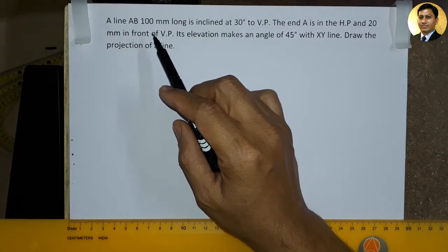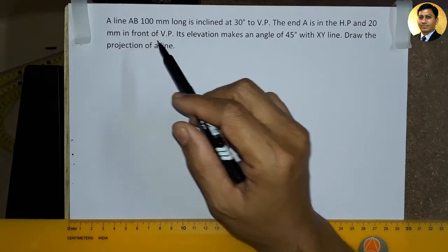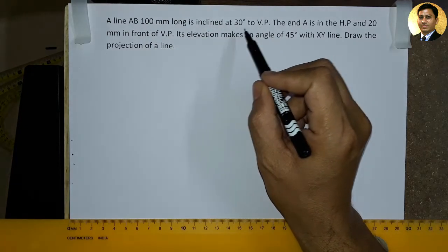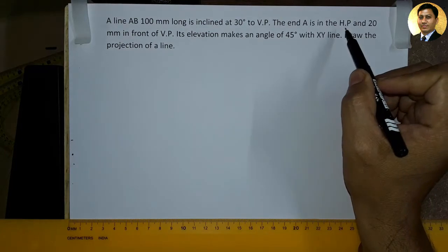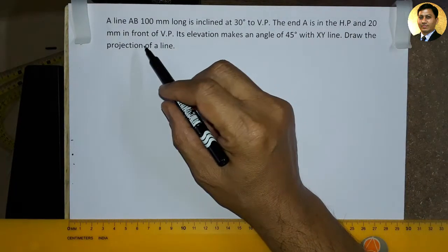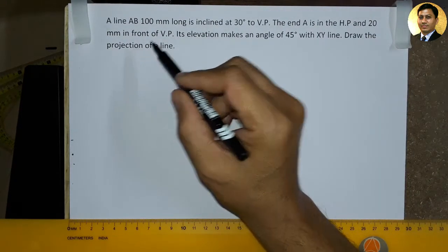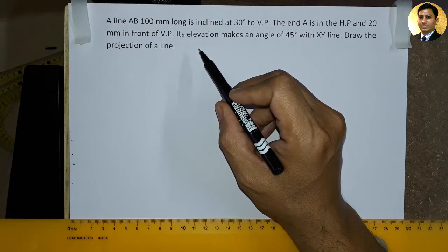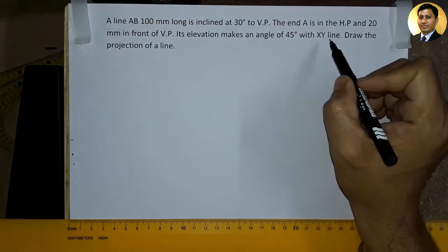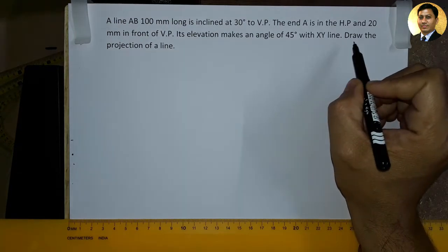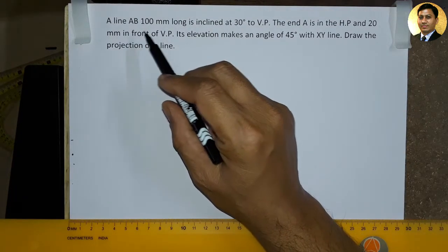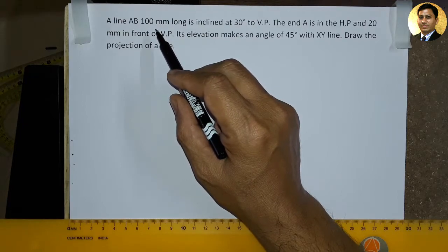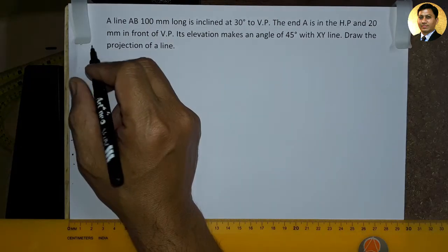In this data, we have line AB which is 100 mm long. This line AB is in the horizontal plane and vertical plane. So true length is equal to 100 mm.